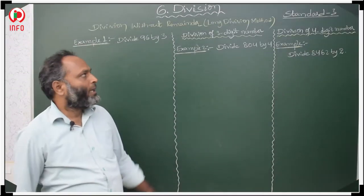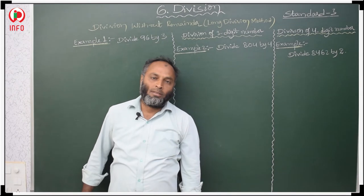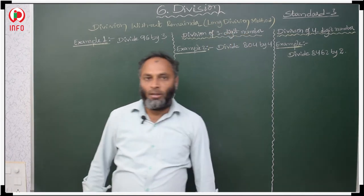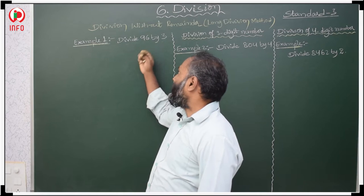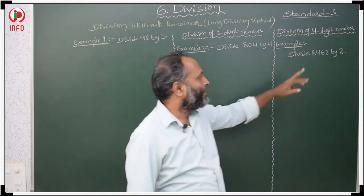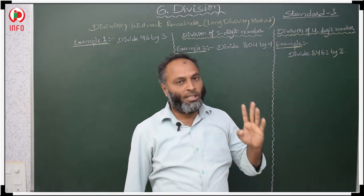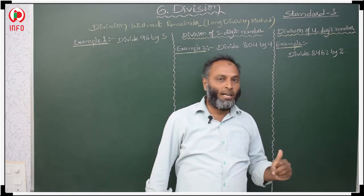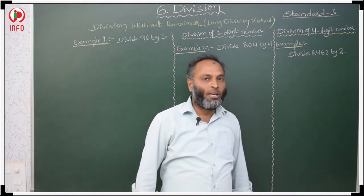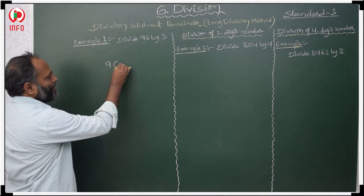The next concept is division without remainder. These sums are given without remainder. We have to do this division using the long division method. First, what is given: 96 is a two-digit number, 804 is a three-digit number, and 8462 is a four-digit number. We have to divide a two-digit number with a single digit, a three-digit number with a single digit, and a four-digit number with a single digit.